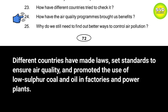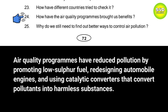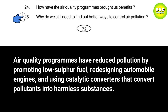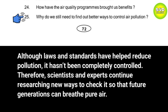Question 24: How have the air quality programs brought us benefits? Answer: Air quality programs have reduced pollution by promoting low-sulfur fuel, redesigning automobile engines, and using catalytic converters that convert pollutants into harmless substances. Question 25: Why do we still need to find better ways to control air pollution? Answer: Although laws and standards have helped reduce pollution, it hasn't been completely controlled. Therefore, scientists and experts continue researching new ways to check it so that future generations can breathe pure air.